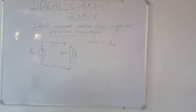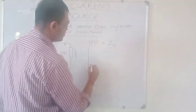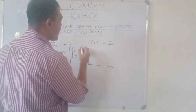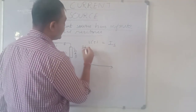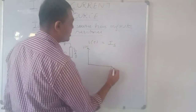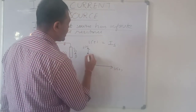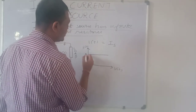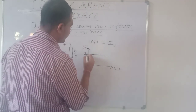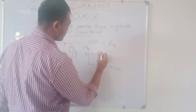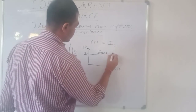If we draw the IV characteristic curve, we have It on the Y axis and Vt on the X axis. Since the current It is always equal to Is, it is a horizontal line parallel to the X axis, where the value of It is always equal to Is. So the slope is 0.